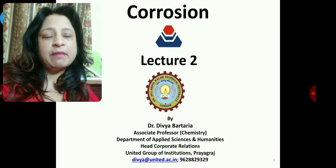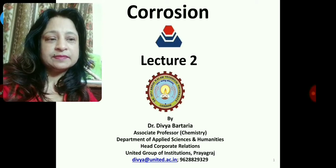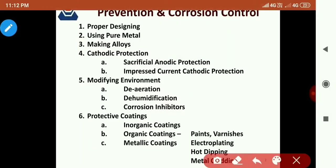Today we will be talking about corrosion prevention and corrosion control methods. There may be different methods. Proper designing of the metal is very important, because if there are crevices in the metal or areas that retain moisture, the chances of corrosion are quite high. The design should be done in such a manner that moisture retention and aeration are as low as possible.